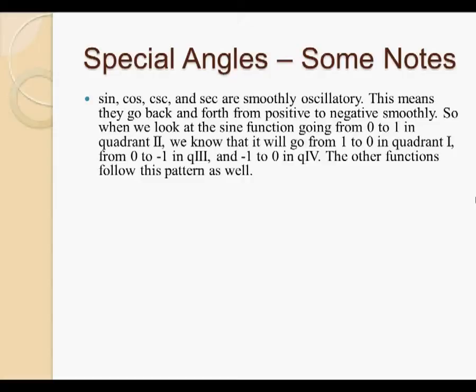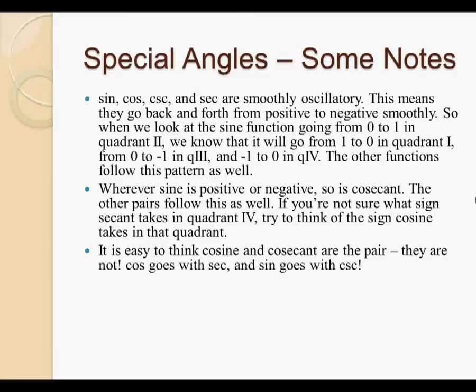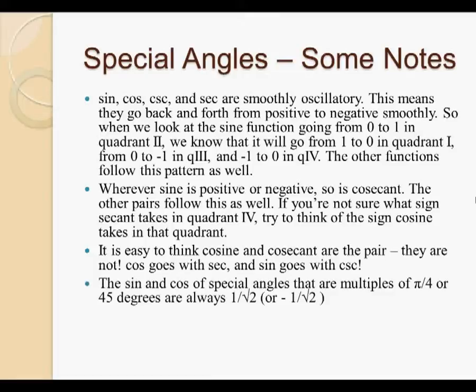Wherever sine is positive or negative, so is cosecant. The other pairs follow this as well. If you are not sure what sign secant takes in quadrant 4, try to think of the sign cosine takes in that quadrant. As I mentioned before, it is easy to think that cosine and cosecant are the pair. They are not. Cosine goes with secant, and sine goes with cosecant.